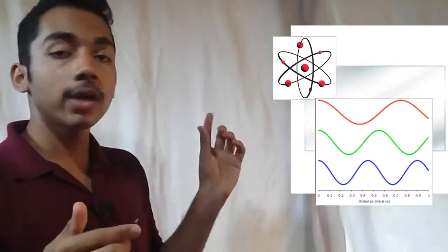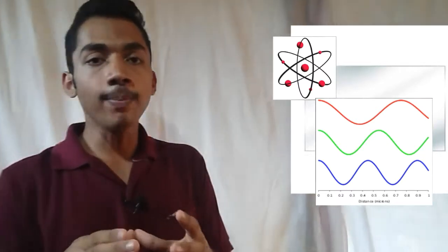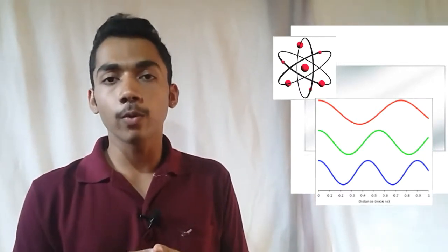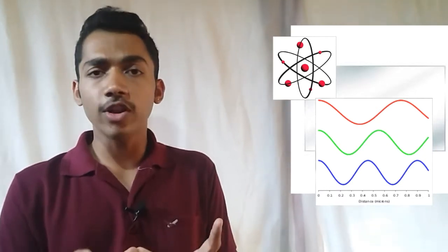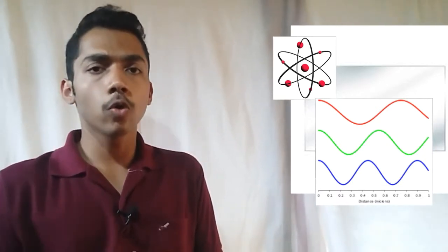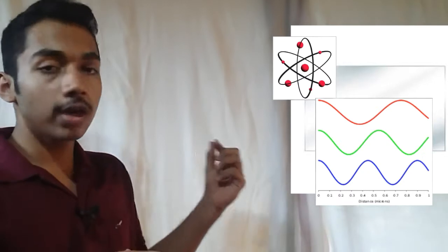So to understand the slowing down of light, let us consider the light wave passing through glass. What will happen is, we know that light is an electromagnetic wave and different colored light will have different ranges of wavelengths. So when the light wave is passing through glass,